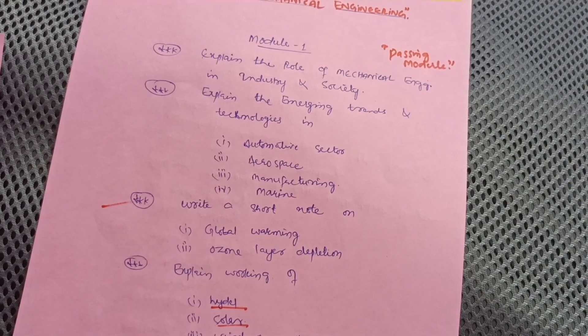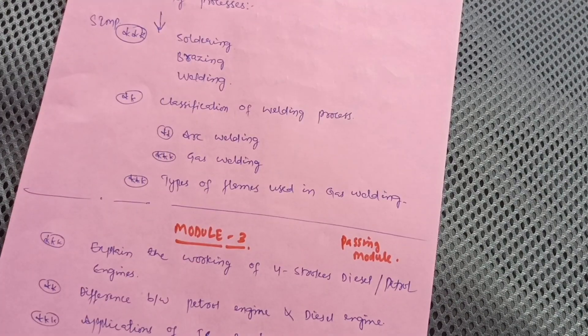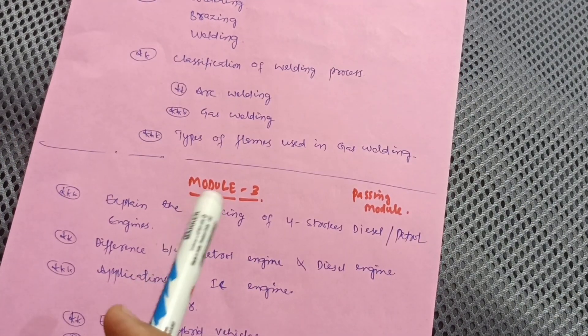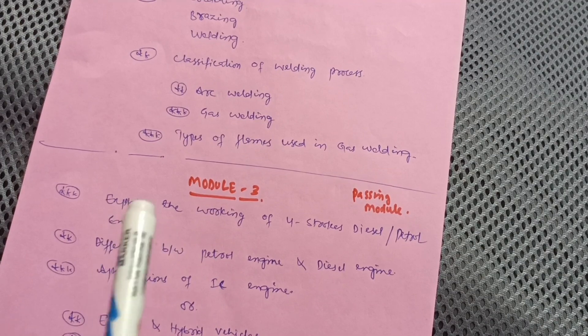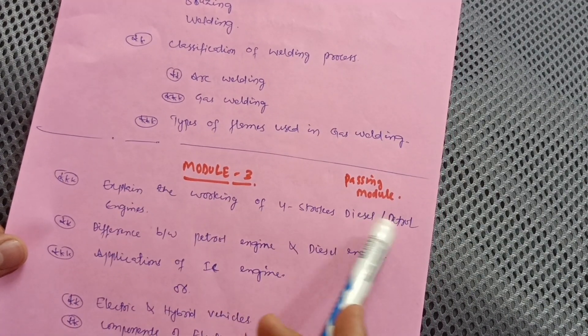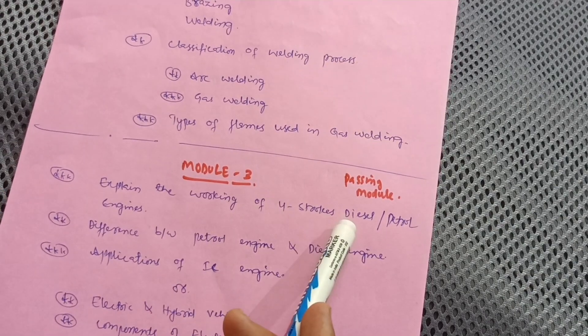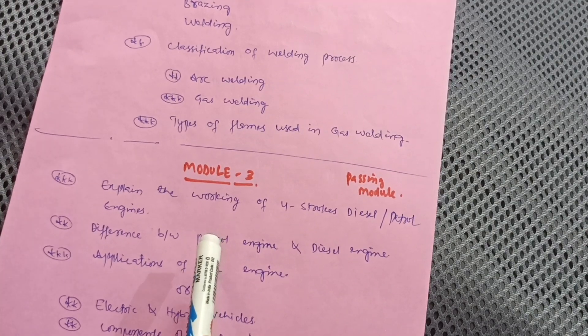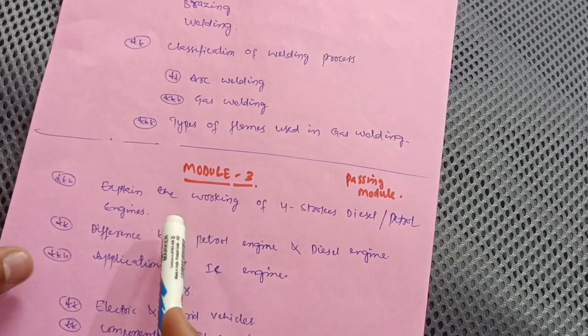In Module 3, you have to cover only six questions. Explain the working of four-stroke diesel or petrol engine. Sometimes they will ask diesel engine or sometimes petrol engine, depending on the evaluator. Difference between petrol engine and diesel engine is a six marks question, and applications of IC engine.